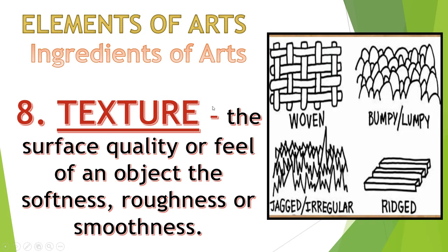Next is texture. Texture is the surface quality or feel of an object — its softness, roughness, or smoothness. Texture can be identified by touching. How do you know if an object is soft, rough, or smooth? You touch it. Examples of texture types include woven, bumpy or irregular, and ridged. That is the element of arts called texture.